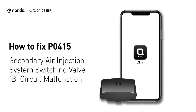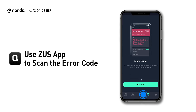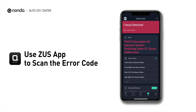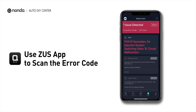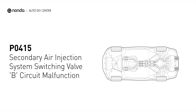If you are getting a P0415 error code, this video is going to show you two practical solutions to fix the error code at home. Use the Zeus app to scan your vehicle and see the error code P0415. It indicates that the engine control module got input from the air injection system driver that the air pump has malfunctioned with an open or short circuit.